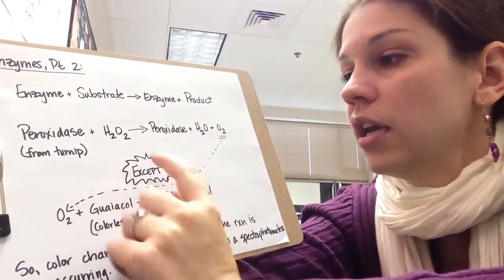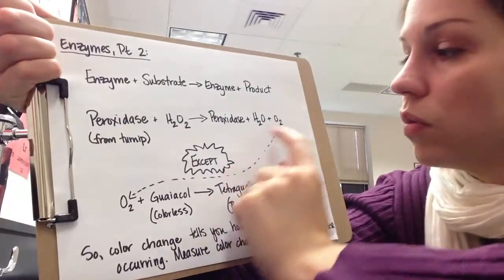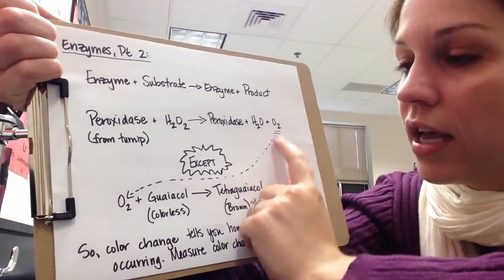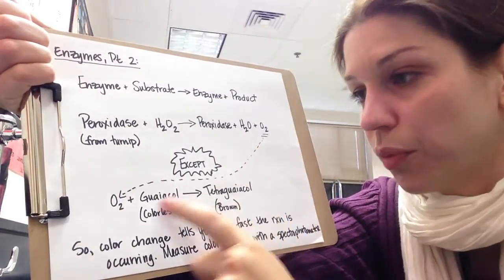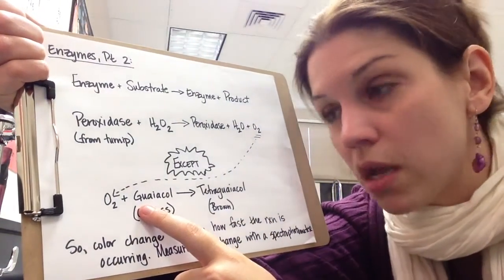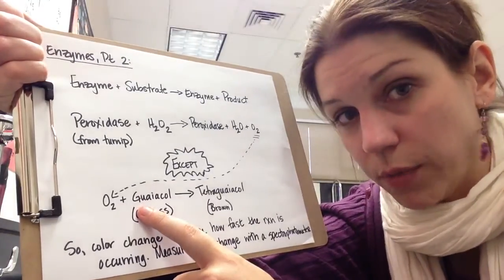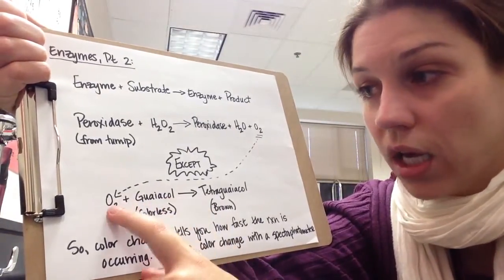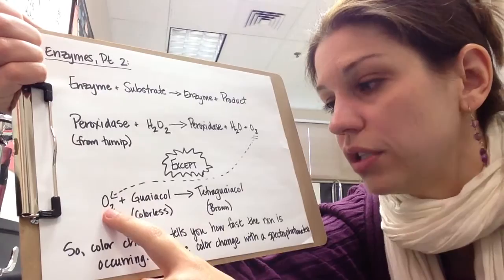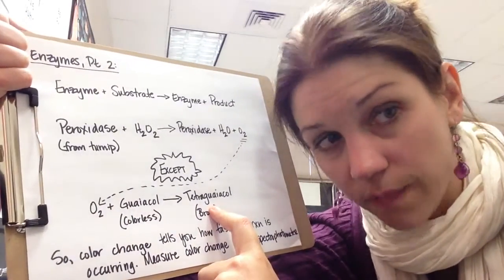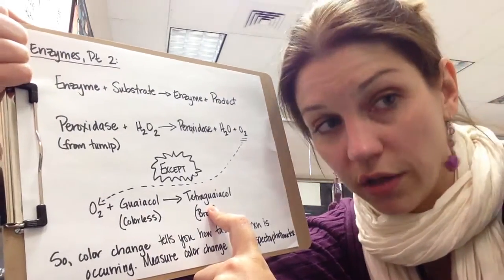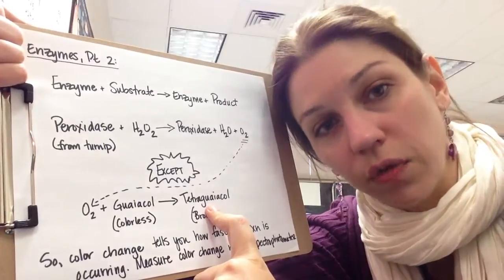Here's the big exception, except we're taking this oxygen, and also in our test tube, we're putting in something called guayacol. Guayacol is an oxygen acceptor, and when guayacol and oxygen get together, they produce something called tetraguayacol. Tetraguayacol turns colors, and that's what we're using it for in this case.